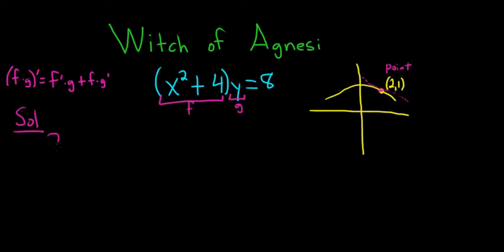So the derivative of the first piece is just 2x, right? Because the derivative of 4 is 0, times the second piece plus the first piece times the derivative of y. Well that's just dy/dx.